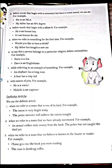So let's understand about the definite article. THE — T-H-E — is called the definite article. The first use: when we refer to a noun that is one of its kind, something unique in the universe, in that case we use the definite article. Like: the moon, the sun, the prime minister. And when we refer to a noun that we have already mentioned, we use 'the'. For example: An armed robber stole money from the bank, and the police have not caught the thief yet.